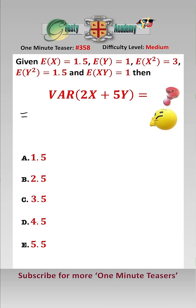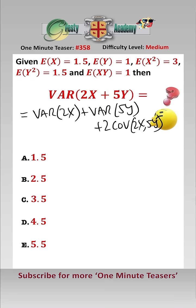So VAR(2X + 5Y) is equal to VAR(2X) + VAR(5Y) + 2 times the covariance of 2X and 5Y.